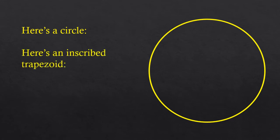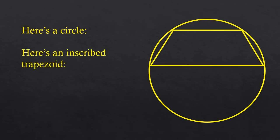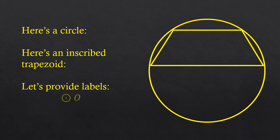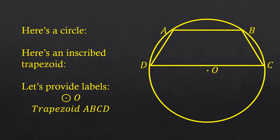So let's take a circle and inscribe a trapezoid into it. To inscribe a polygon into a circle means that the vertices of the polygon are touching the circle on the inside. The four vertices of the trapezoid are touching the circle. We'll call the circle, circle O — that's the center point, which defines the circle and its radius. The trapezoid we'll label A, B, C, D.